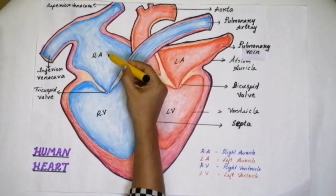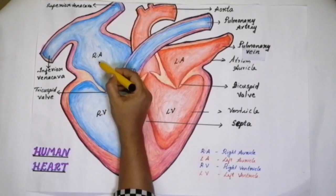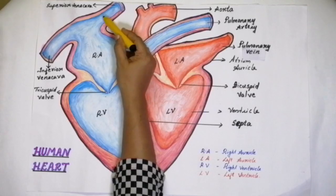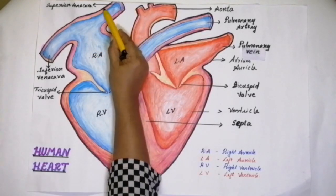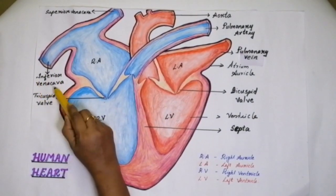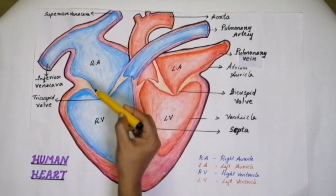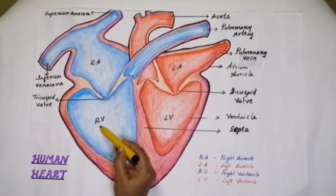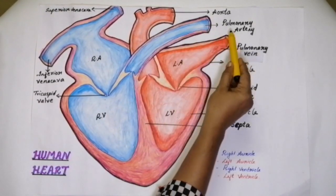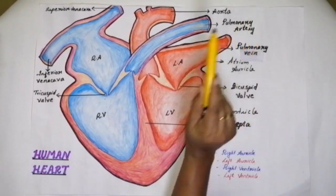There are four chambers in our heart. First, the right auricle. You can see two blood vessels that open into the right auricle. This blood vessel is called the superior vena cava, and this blood vessel is called the inferior vena cava. So the superior vena cava and inferior vena cava open into the right auricle. This is the right ventricle, and from the right ventricle there arises a blood vessel called the pulmonary artery.